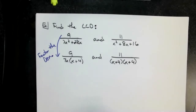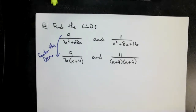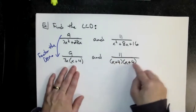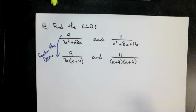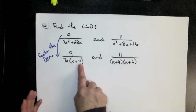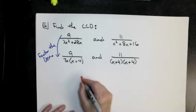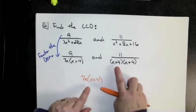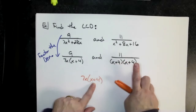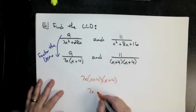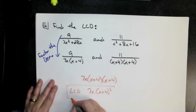Now that I've factored both denominators, I can see all the pieces. The first is made of 7x and (x plus 4); the second is made of two (x plus 4) factors. Your textbook says: pick everything from the first denominator — so 7x and (x plus 4) — then add any unlisted factors from the second. The (x plus 4) is already listed once, but the second one isn't, so I include it. The least common denominator is 7x times (x plus 4) squared.